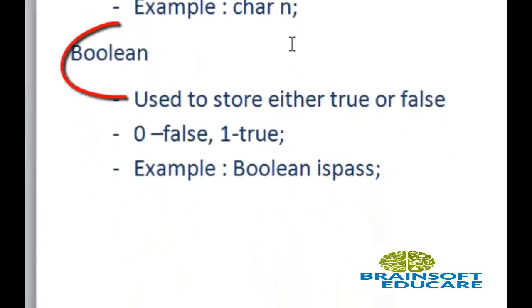Boolean. A boolean data type is mainly used to store either true or false. The compiler has default values for boolean: 0 is false and 1 is true. Here, this is the example of boolean data type.